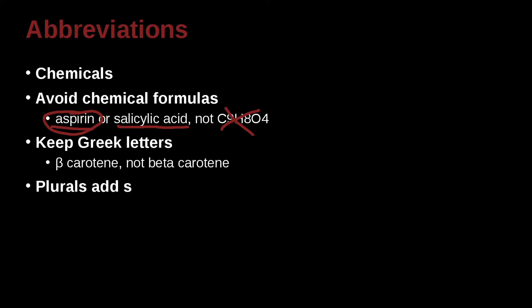For plurals, you need to add an S. So for example, if you have the abbreviation IQ, and you want to make it plural, you say IQs. Please pay attention there. No space before, right? There's no space there. There's no apostrophe there. It just says IQs, BDs. Volumes, V-O-L-S.